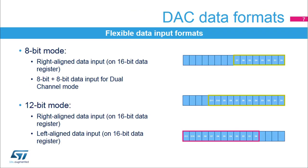The DAC can support different input formats. In 8-bit mode it is a right aligned 8-bit data format. In dual channel mode it is an 8-bit plus 8-bit data format in order to provide input data for two DACs simultaneously. In 12-bit mode, either a right or left aligned mode can be used for input data.